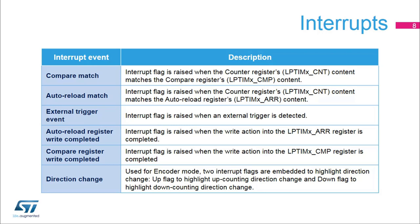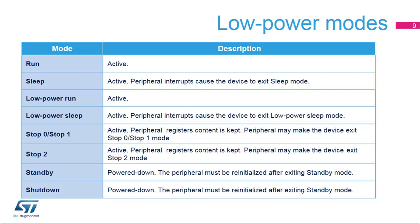The counting direction of the Low Power Timer's counter reflects the rotation direction of the quadrature sensor. The Low Power Timer peripheral is active in the following low power modes: Run, Sleep, Low Power Run, Low Power Sleep, Stop 0, Stop 1, and Stop 2. The Low Power Timer is also able to wake up the microcontroller from Sleep, Low Power Sleep, Stop 0, Stop 1, or Stop 2 modes.